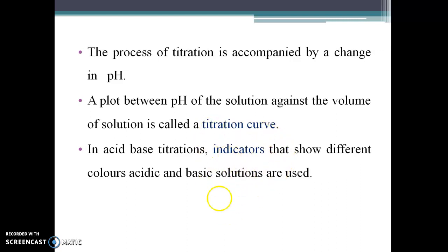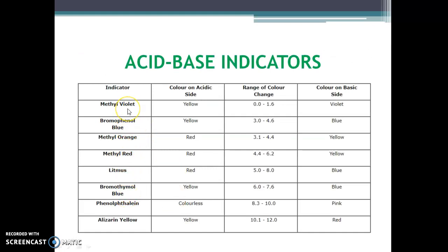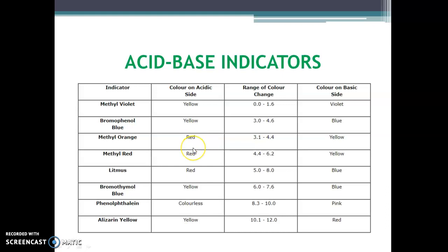In addition to the indicators, the indicators are chemical molecules that can show different colors in acidic and basic solutions. Common indicators used in acid-base titrations include methyl orange and phenolphthalein. Methyl orange shows a red color in acidic solution and a yellow color in basic solution.